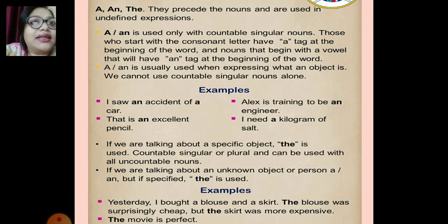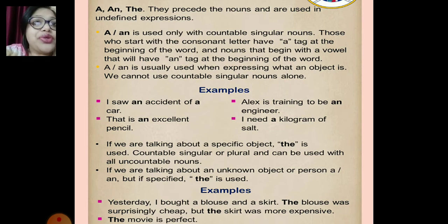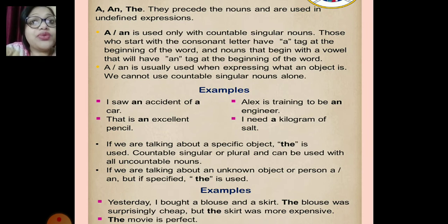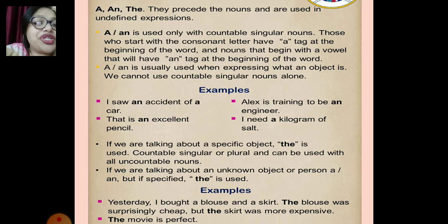Now 'a' and 'an' precede the nouns and are used in undefined expressions. 'A' and 'an' are used only with countable singular nouns. Nouns that start with consonant letters use 'a' at the beginning, and nouns that begin with a vowel use 'an' at the beginning. We cannot use an uncountable singular noun alone.